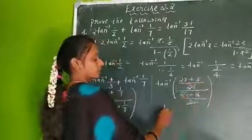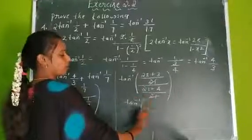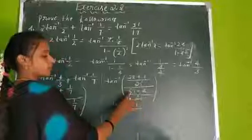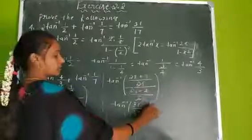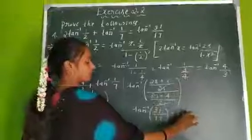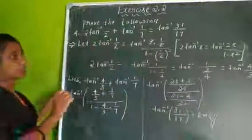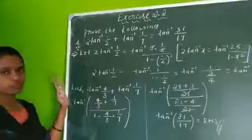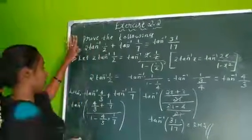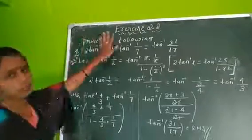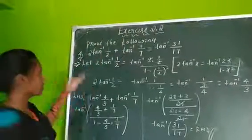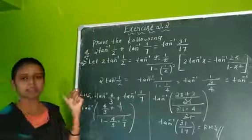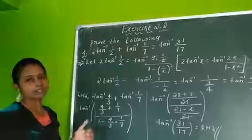The 21s cancel out, giving tan inverse (31/17), which is the RHS. So the proof is complete. In this exercise we had only 4 questions to prove, and we have done all 4. The next topic is the simplest form, which is important for 3-mark questions — we will do that in the next class.